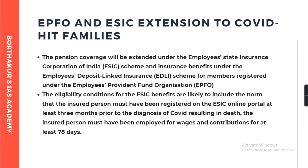What is the ESIC scheme and what are the benefits included? All dependent family members of a person who died of COVID will be eligible for a pension equivalent to 90% of the average daily wage drawn by the worker as per existing rules. This benefit will be available from 24th of March 2020 till 24th of March 2022. To avail benefits, the insured person must have been registered on the ESIC online portal at least three months prior to his death or prior to the diagnosis of the COVID result.